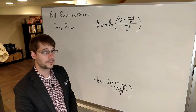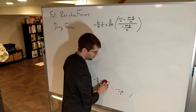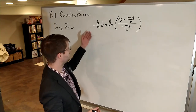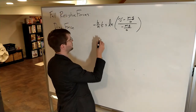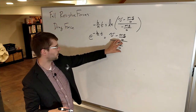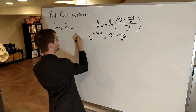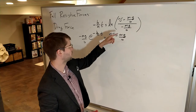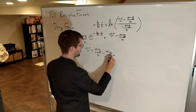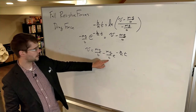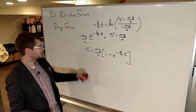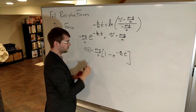Now we use the definition of the logarithm to rewrite this as an exponential — raise both sides to the power of e. Solving for v, we multiply across and then add mg over b to both sides. We can do one last step, which is to pull out a factor of mg over b, giving our final equation for velocity as a function of time.